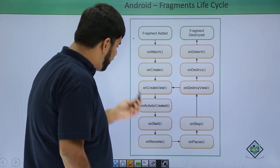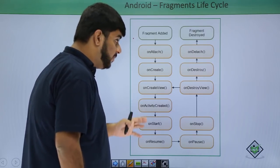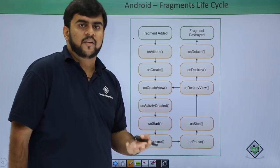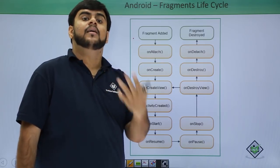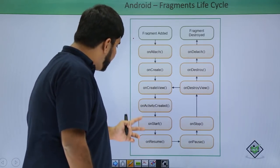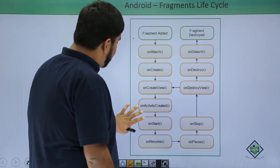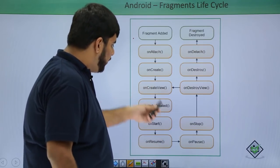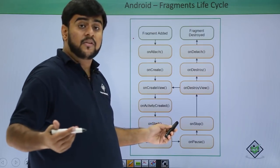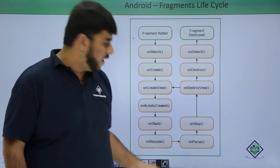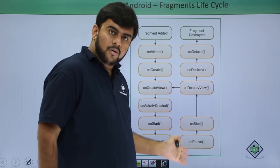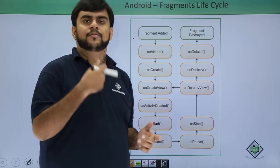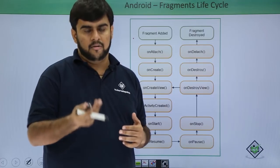After this, we have the on-activity-created method. This is called after the view has been successfully created and is ready to be loaded. When the activity is created, functions like findViewById and other activity parameters are live to be used in our fragment. Then the flow comes to on-start, which means the activity is ready for user interaction. Then on-resume — if you have resumed from a previous state, you can use this to continue your application running the way it was.